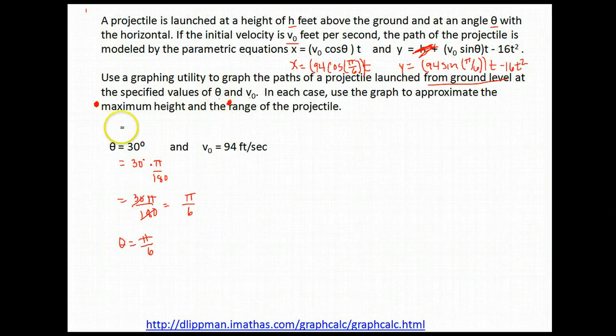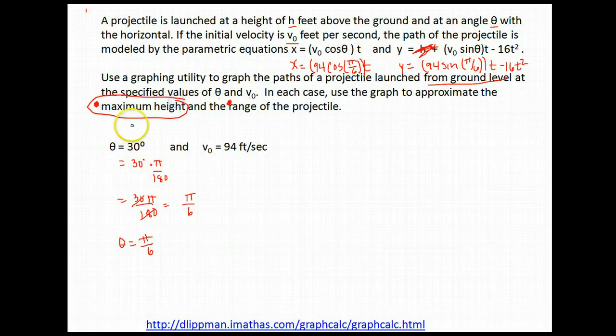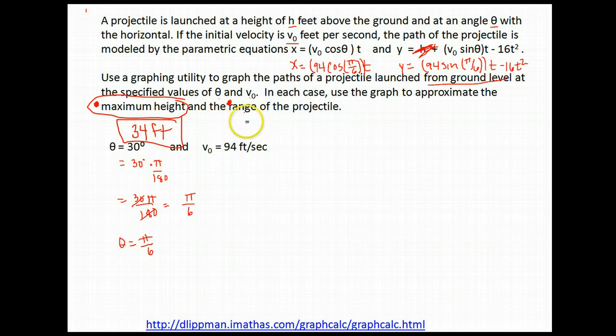Okay so as we come back here to our question to answer our question, the maximum height we saw on our graph was at about 34 feet. So there's our first answer and the range of the projectile, the distance it traveled before it hit the ground, we found to be about 239 feet.